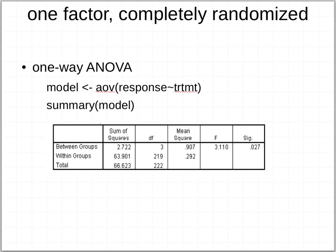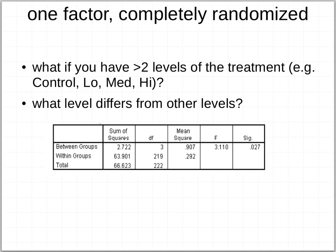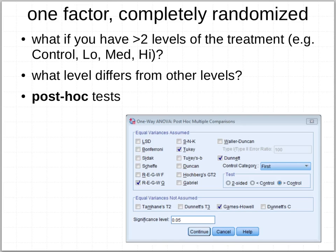So a one-factor completely randomized design is pretty straightforward, and you've already conducted analyses like this. But what if you had more than two levels of treatment — control, low, medium, high? You still get a general ANOVA that tells you in general there is some statistical effect, but you can't tell which specific treatments differ from each other. That's where a post-hoc test — an 'after the fact' test — comes in. There are many options shown in SPSS: the least significant difference, Scheffe's, Tukey's, and Dunnett's test, which always compares treatments against a control. Some assume equal variance; others do not.